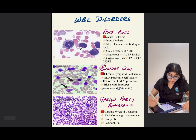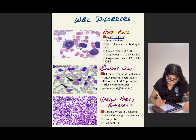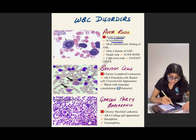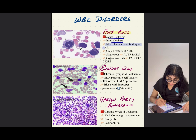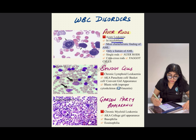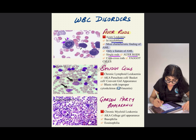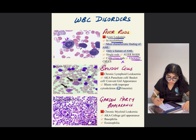The next topic is WBC disorders. The first one is Auer rods, seen in acute leukemia in myeloblasts. It is the most characteristic finding of acute myeloid leukemia and only a feature of AML. If you see a single rod, it is called an Auer rod, but if you see a crisscross rod pattern, it will be called a faggot cell.